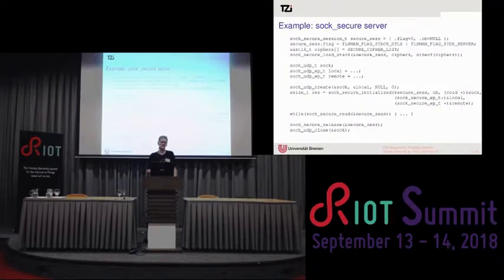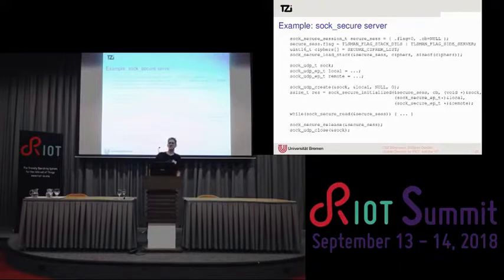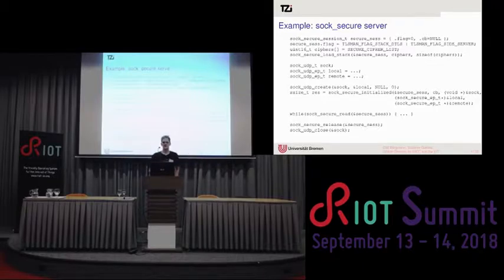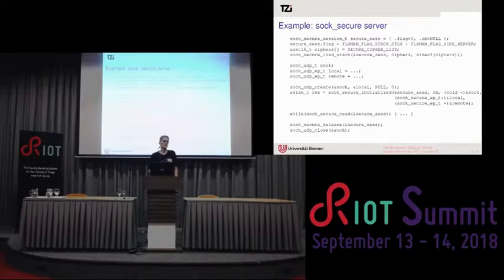The SOC Secure Server would be used like this — it's a lot of code but not difficult to read. You create a secure session object and initialize the entire DTLS stack with the cipher suite, pre-configuring some keys. Then you create a socket object and initialize it with the local and remote address, establishing a secure association between two entities. Then you have your main loop calling SOC Secure Read, where the nanocoap server's loop calls SOC UDP receipt.